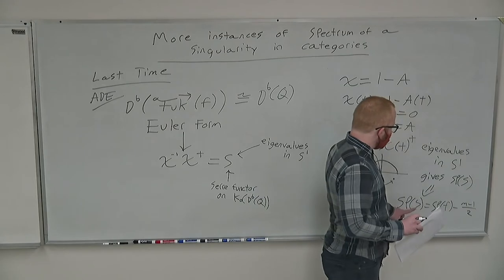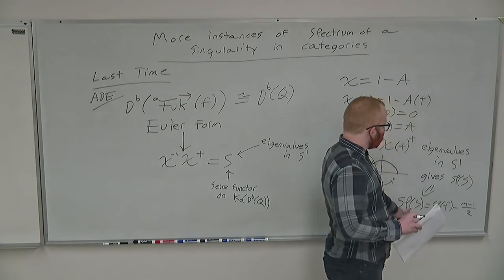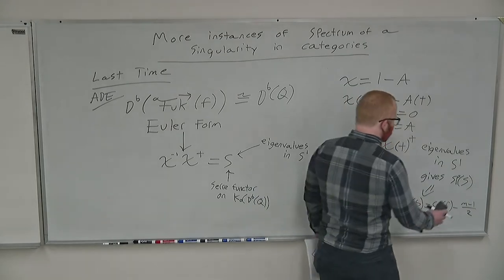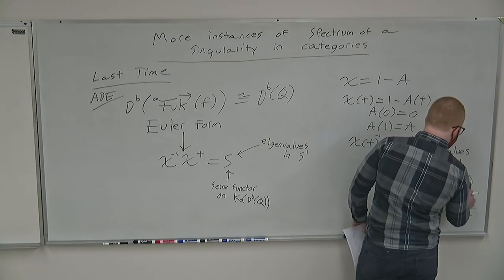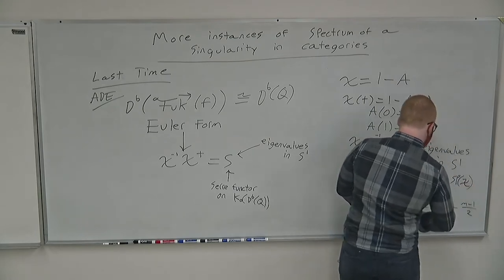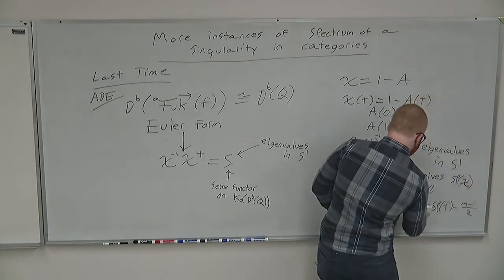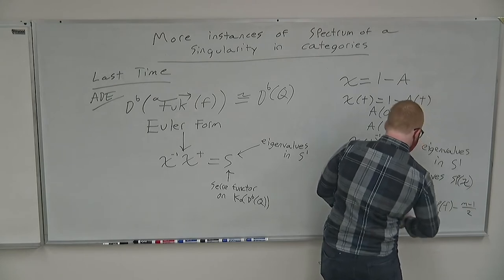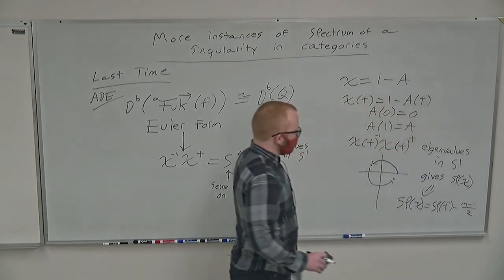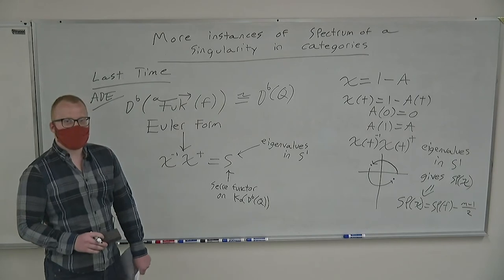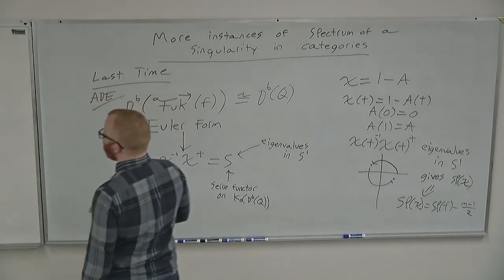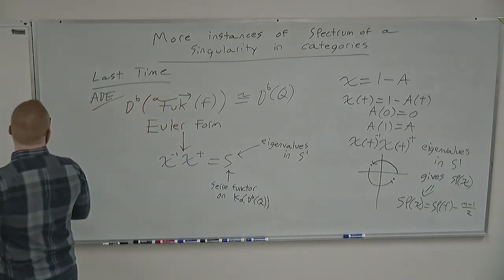So if I know the spectrum of my chi, the spectrum of my chi is the spectrum up to a shift by dimension.